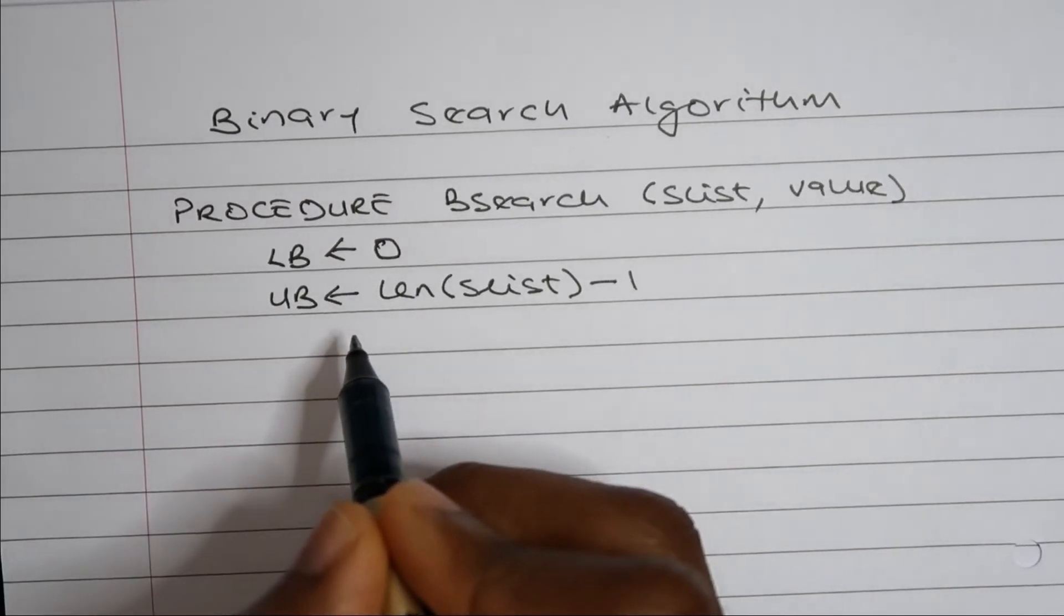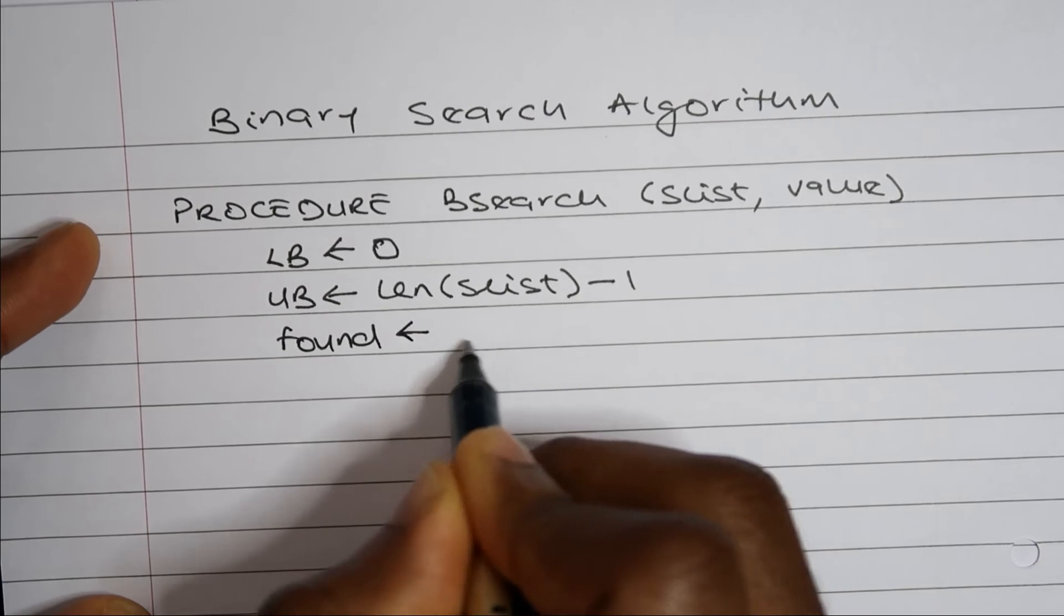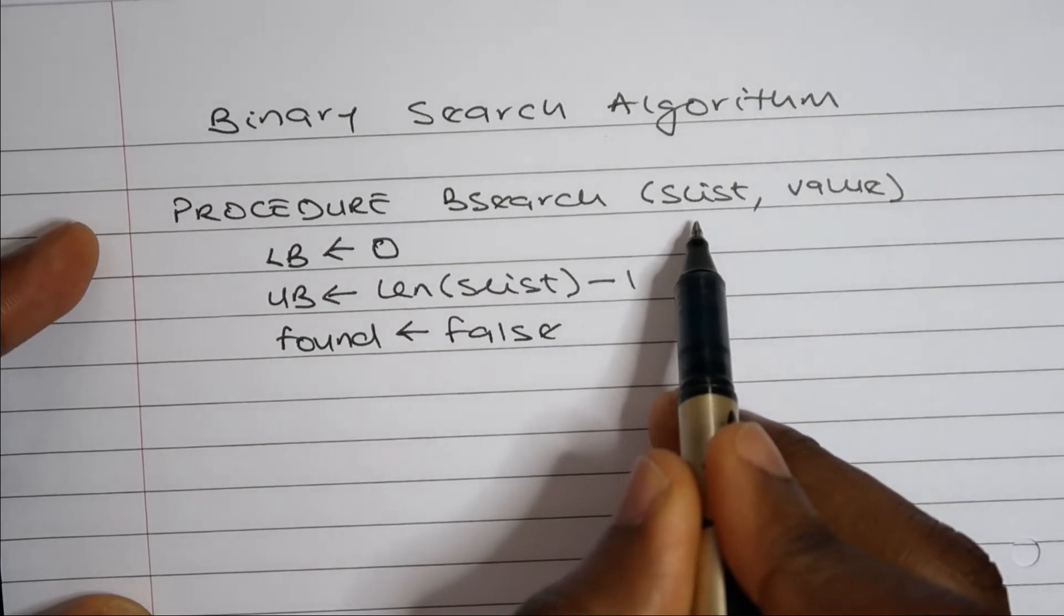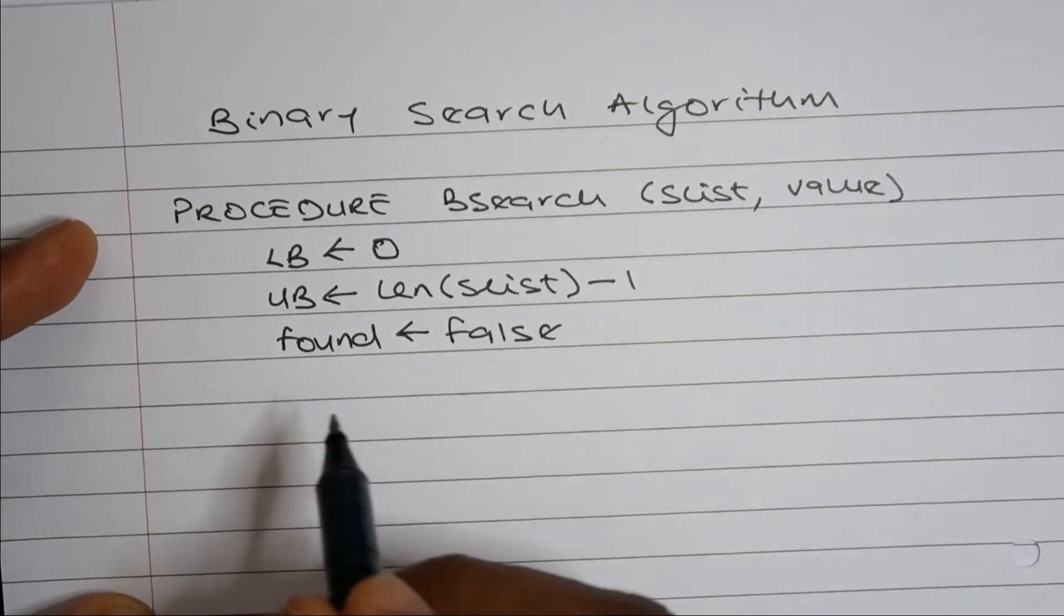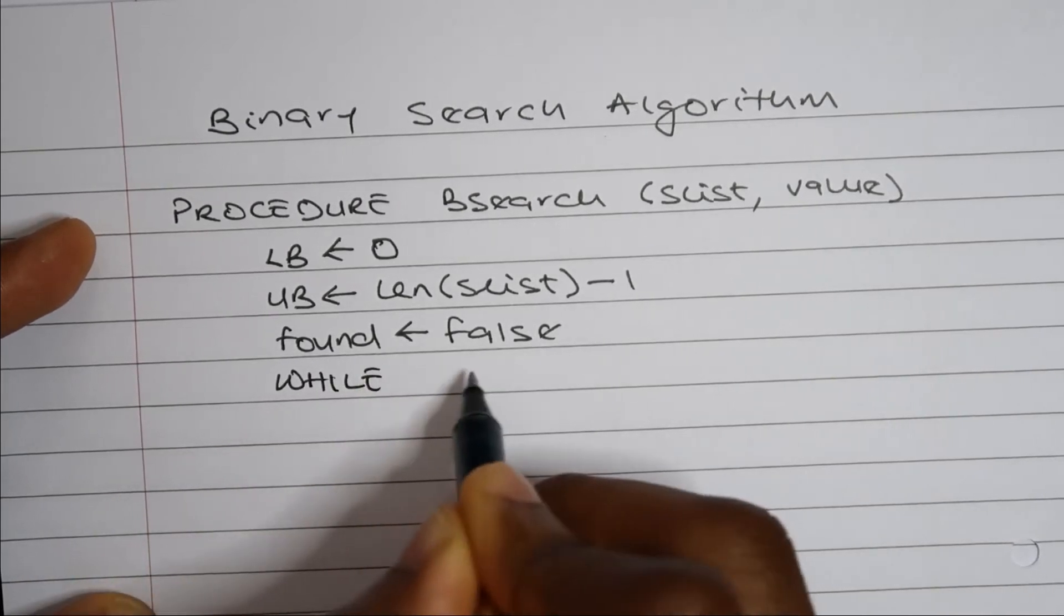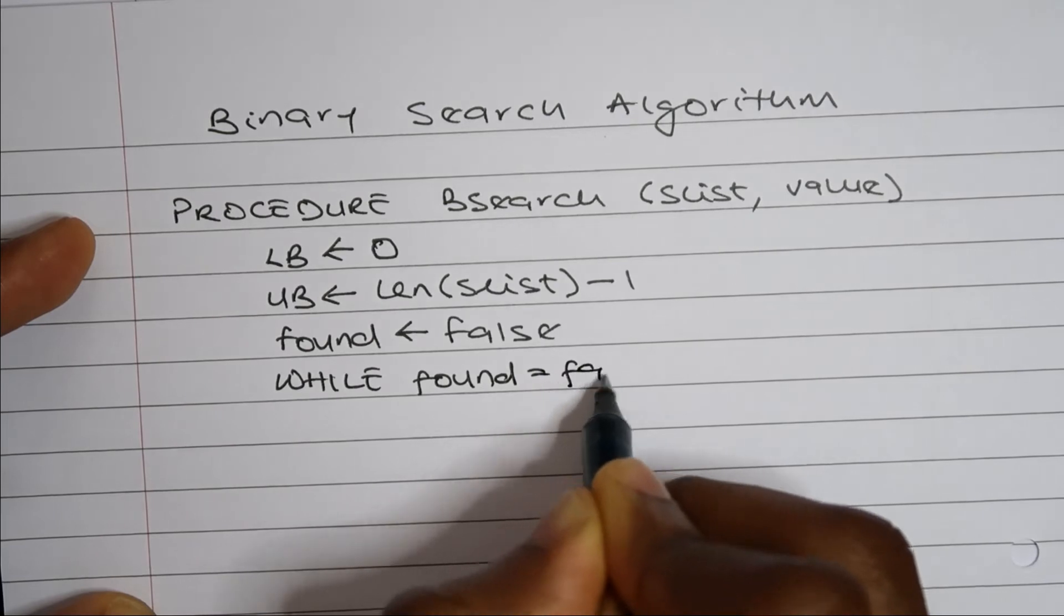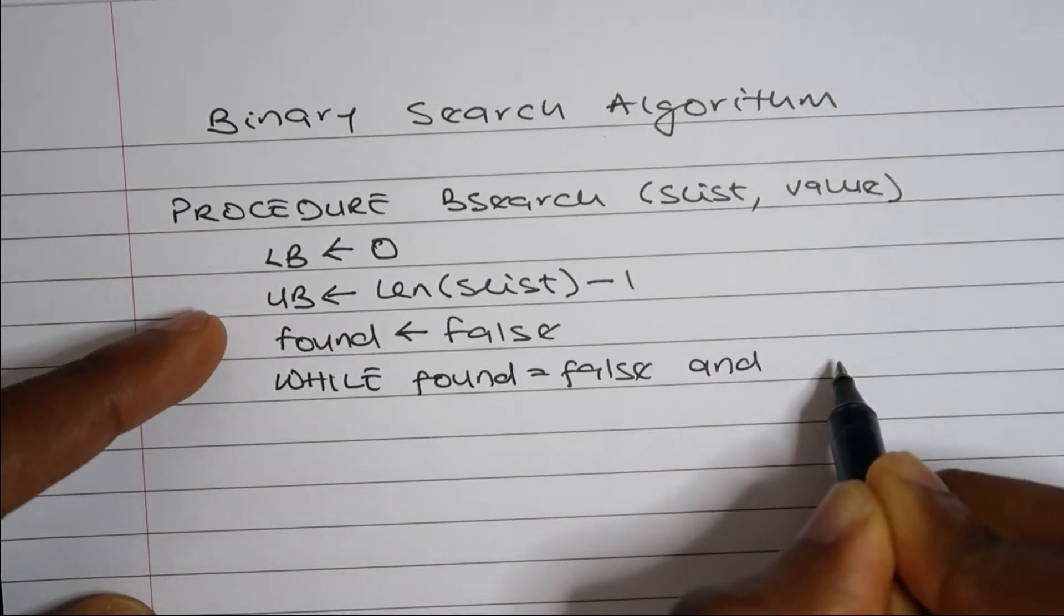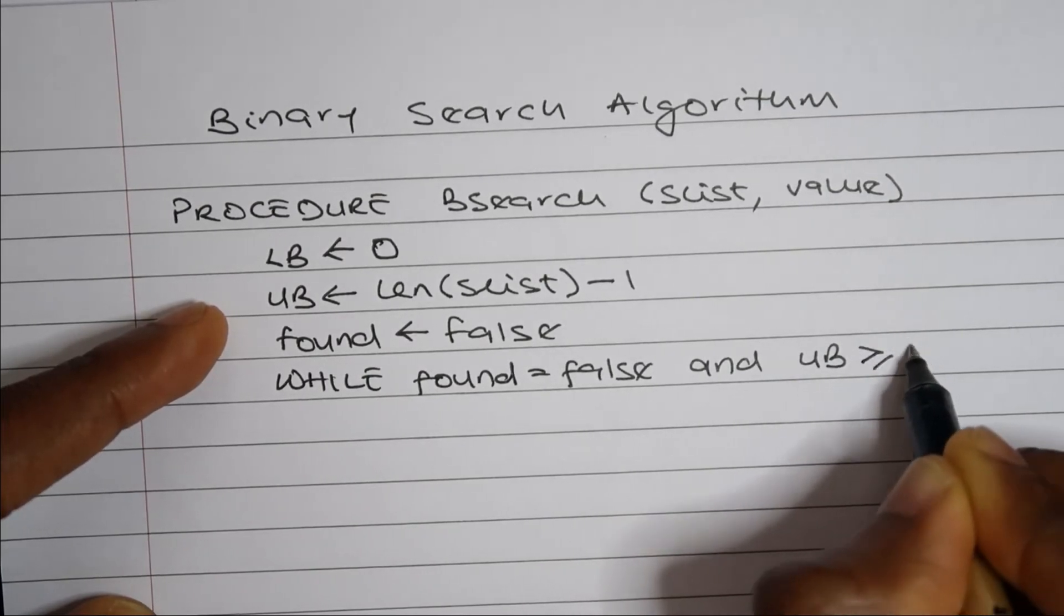Now, the next thing I'm going to do here is create a variable and I'll call it found. This variable will change if the value I'm looking for is inside the list I'm searching. Now I would use iteration here, and in my iteration, I want to carry on repeating my loop while found is false and my upper bound pointer is greater than or equal to my lower bound pointer.